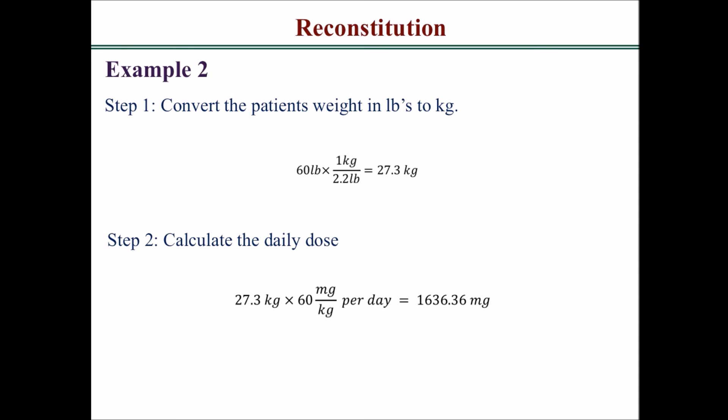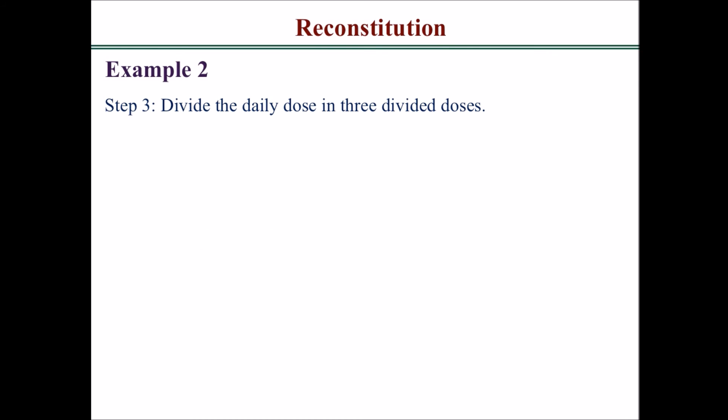You have the patient's weight in kilograms, 27.3, times the directions which is 60 milligrams per kilogram per day, so you'd get 1,636.36 milligrams per day. Next, you want to divide the daily dose in three divided doses. Take 1,636.36 milligrams divided by three doses and you get 545.5 milligrams per dose.